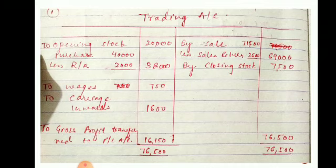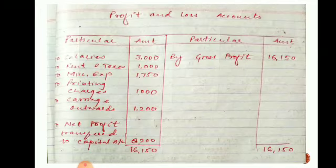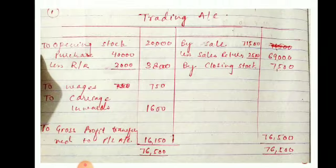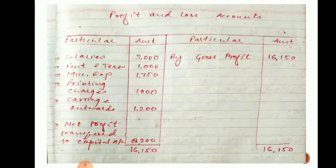In the second part of the question, we prepare the profit and loss account. In the profit and loss account, all expenses are recorded on the debit side and all income on the credit side. The gross profit earned from the trading account is transferred to the credit side of the profit and loss account — that is sixteen thousand one hundred fifty rupees.